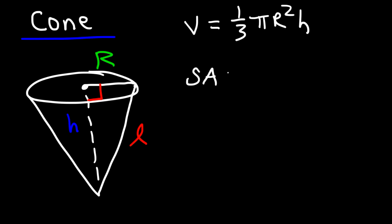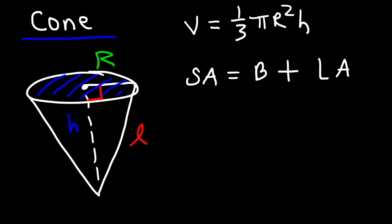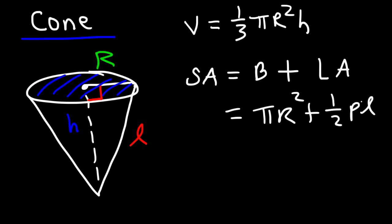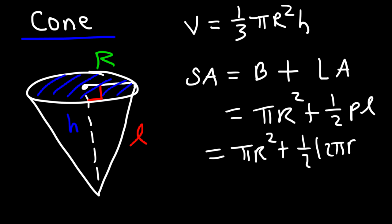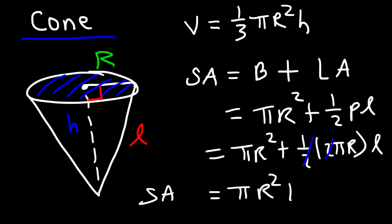The surface area of the cone is the area of the base plus the lateral area. The area of the base is pi R squared. The lateral area is one-half the perimeter times the slant height. The perimeter is the circumference of the circle, which is 2 pi R. So we have one-half times 2 pi R times the slant height L. The one-half and 2 cancel, giving us the surface area formula: pi R squared plus pi R L, where L is the slant height.